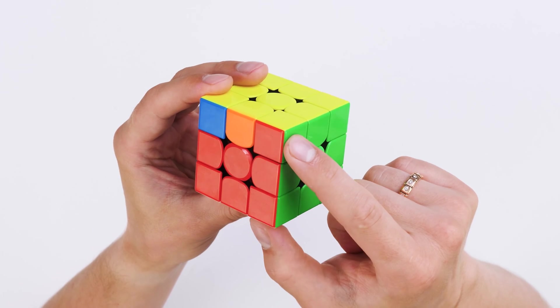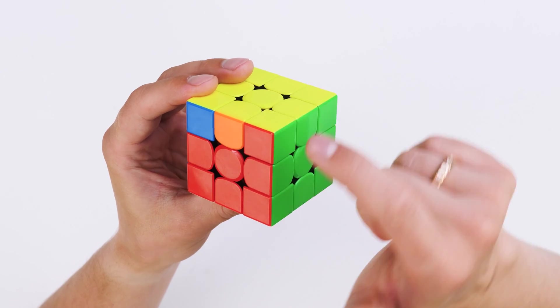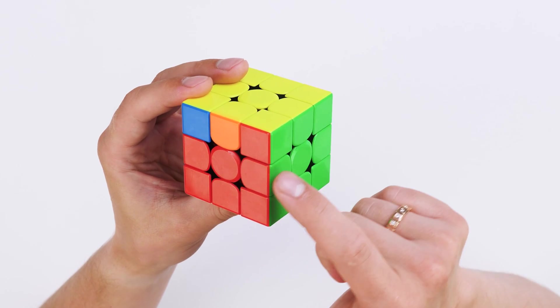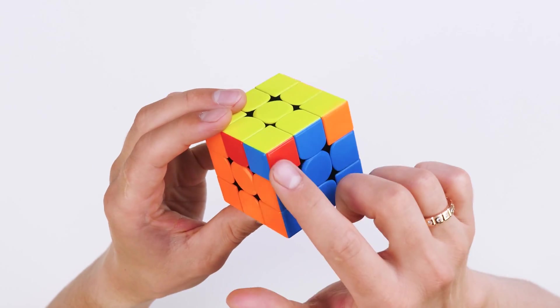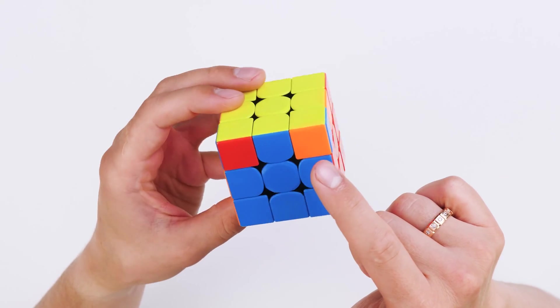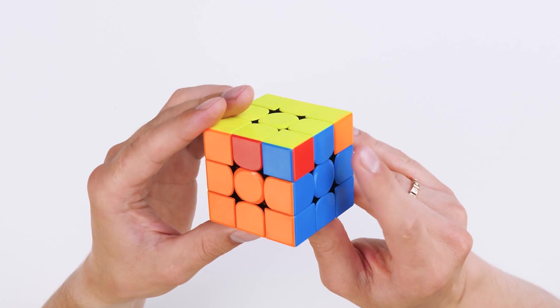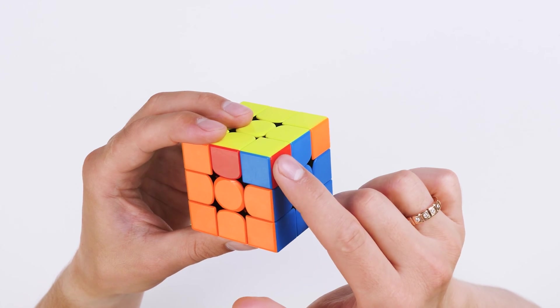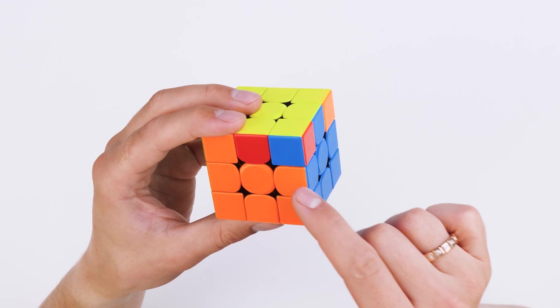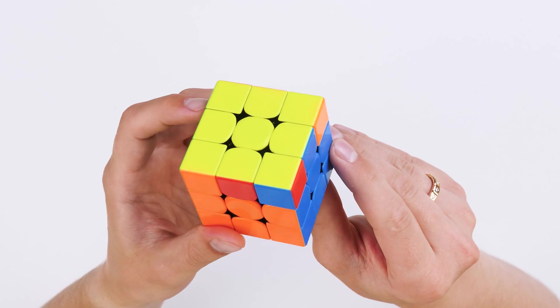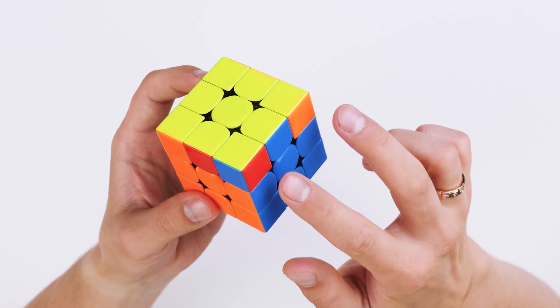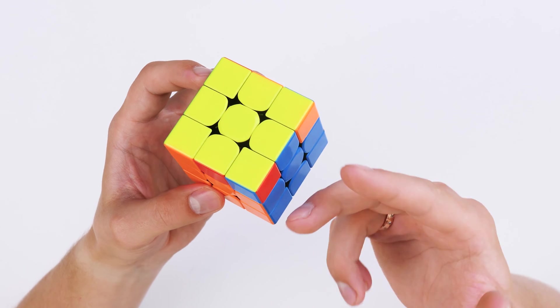This corner will also be considered correct, because yellow, red and green coincide with their centers. But these two corners, which have blue-red and blue-orange, are wrong, because they don't match with their centers. If you think logically, then all that needs to be done at this stage is to swap these two corners.